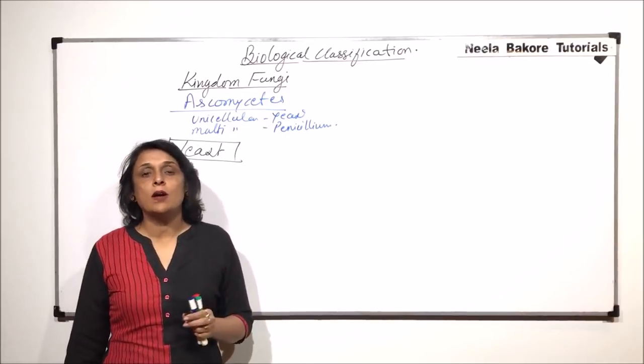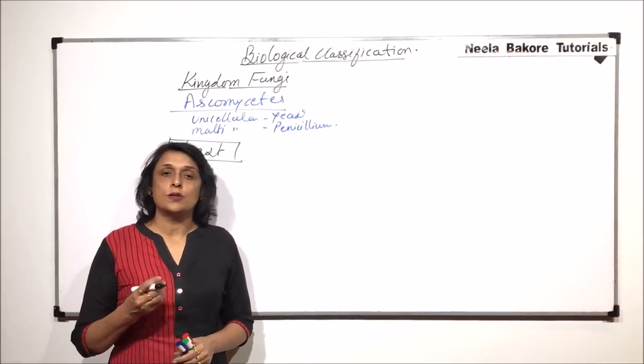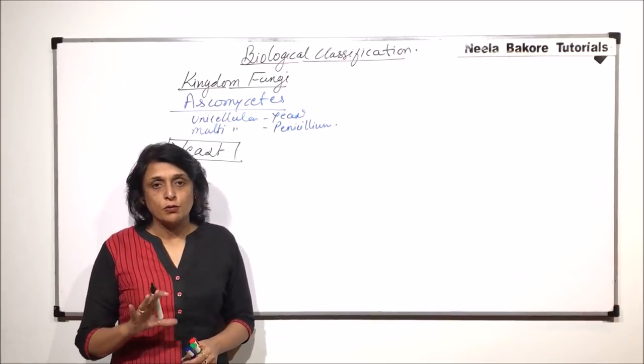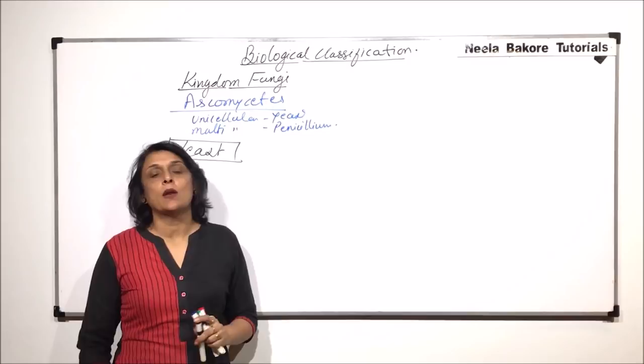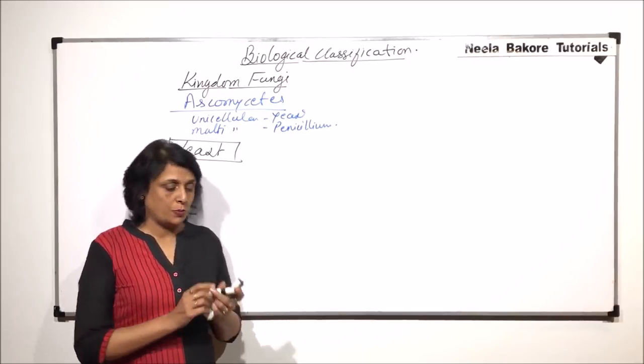Now, it is a typical eukaryotic cell. So, all the structures are like a typical eukaryotic cell. That means nucleus with nuclear membrane, all other organelles, everything is present.